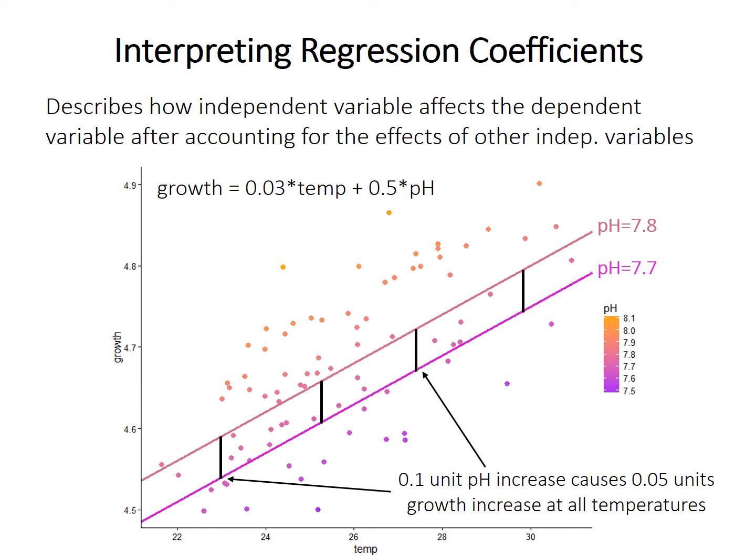One additional caution: because the coefficients indicate the effect after accounting for the other independent variables, the value of a coefficient will definitely change — even to the extent that its sign might change — in a model when you include additional or different independent variables. For example, if we add salinity as a variable, pH might no longer have an effect of 0.5. It can even be the case that a variable has a statistically significant effect in one model but not in a different model with different independent variables. The effect of an independent variable is context dependent.